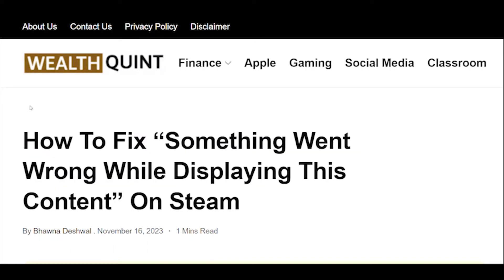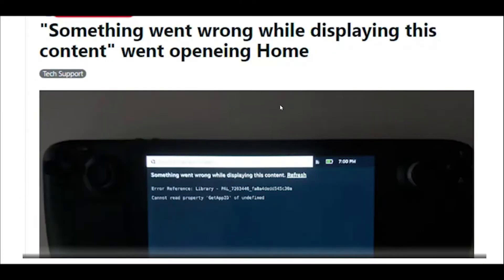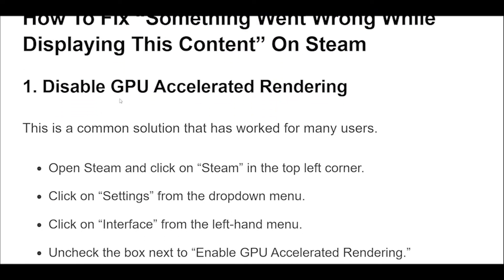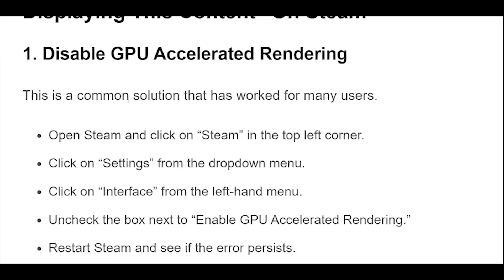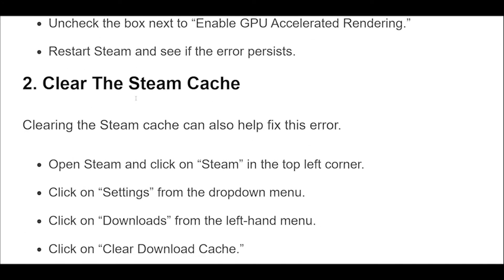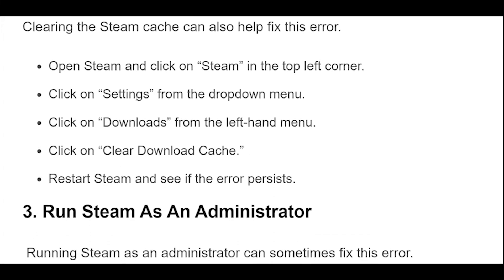How to fix 'something went wrong while displaying this content' on Steam. Solution 1: This is a common solution that has worked for many users. Open Steam and click on Steam in the top left corner. Click on Settings from the drop-down menu. Click on Interface from the left-hand menu. Uncheck the box next to Enable GPU Accelerated Rendering. Restart Steam and see if the error persists.